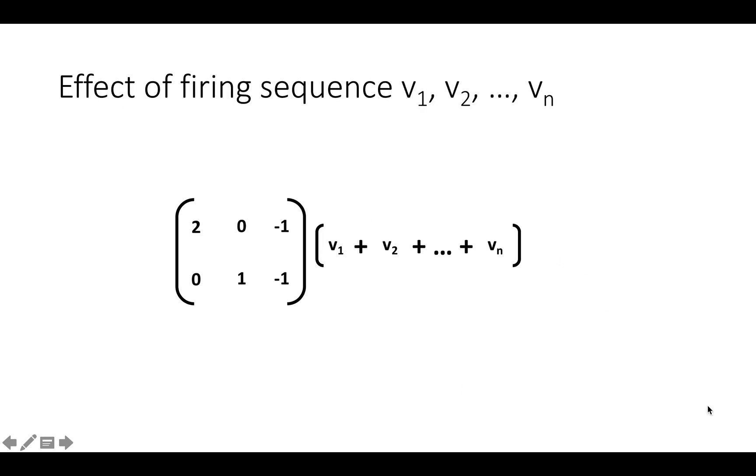We can generalize this, so if we have some firing sequence like we fire vertex 1 and then vertex 2 and then all the way out to vertex n, the effect of the firing sequence on the total amount of data in the data flow graph's buffers is the topology matrix times the sum of all of those firing vectors. Once you see this, it's just one more step to see what a reasonable procedure for deciding how often different nodes can fire is.